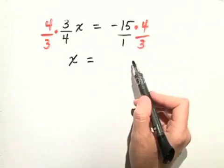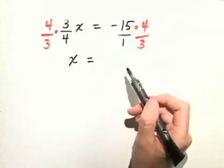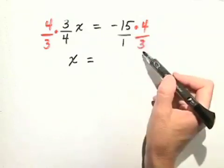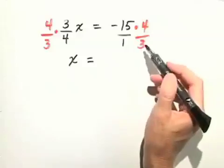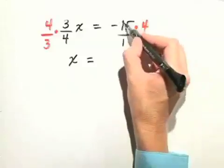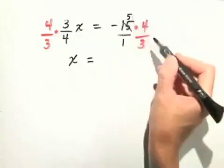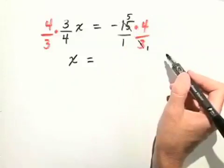Now in this case we can do some canceling by dividing out like factors. Both 15 and 3 are divisible by 3. So 15 divided by 3 is 5, and 3 divided by 3 is 1.